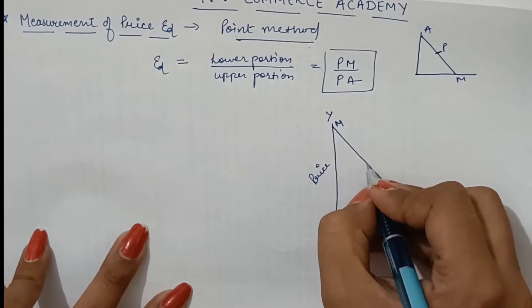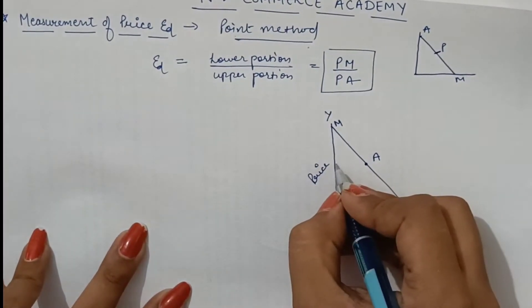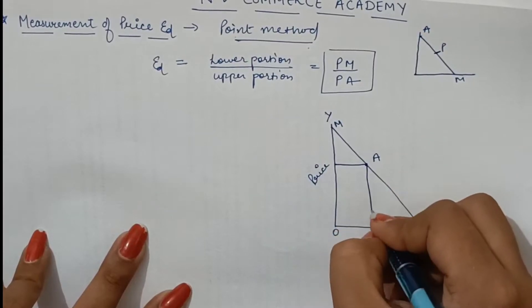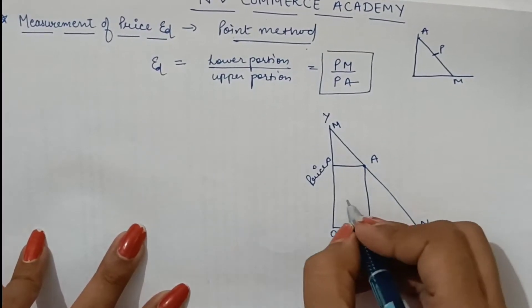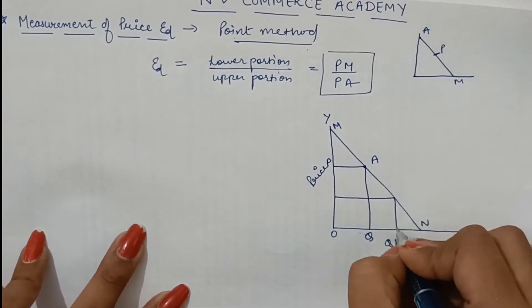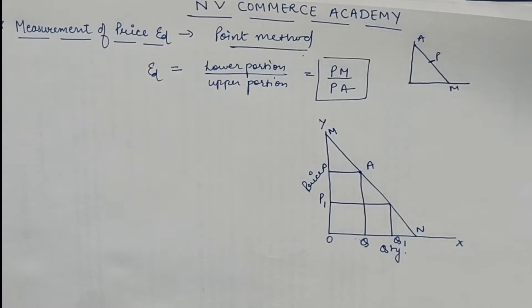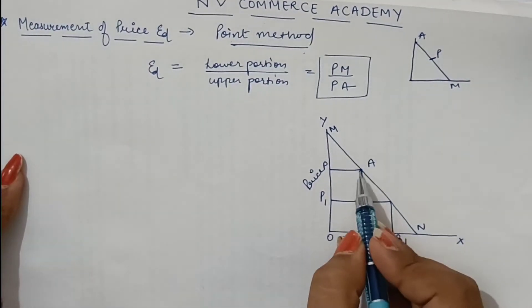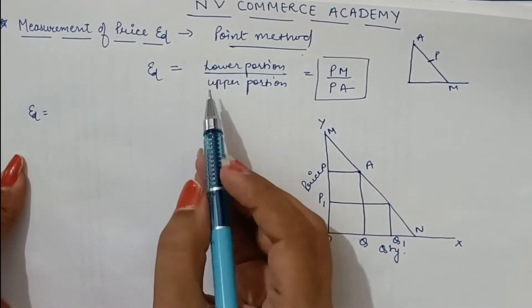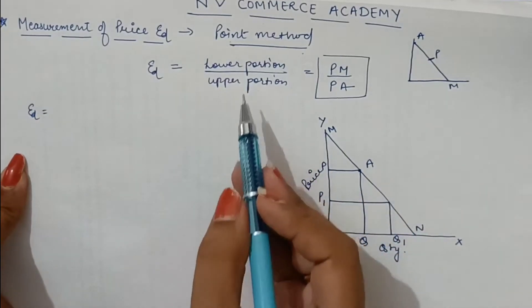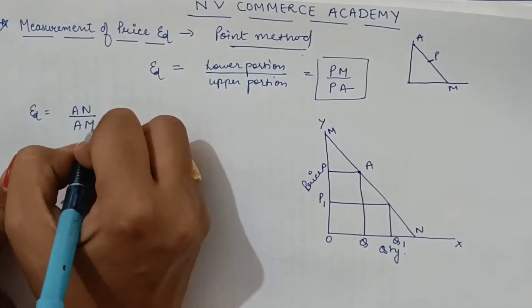At point A, we have to calculate price elasticity of demand. For this, we will draw points P, Q, and the changes P1 and Q1. According to this diagram, we have to calculate price elasticity of demand at point A. If I use the formula — lower portion of demand curve divided by upper portion of demand curve — then the answer would be AN divided by AM.